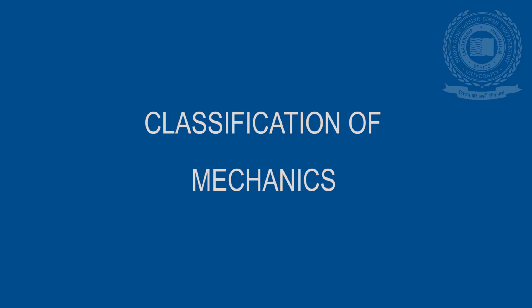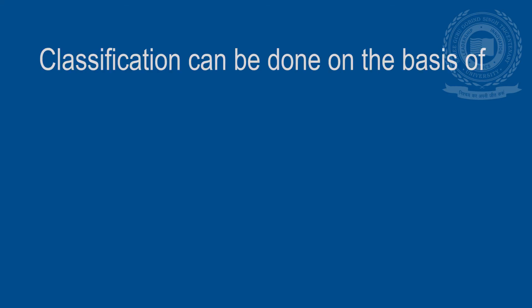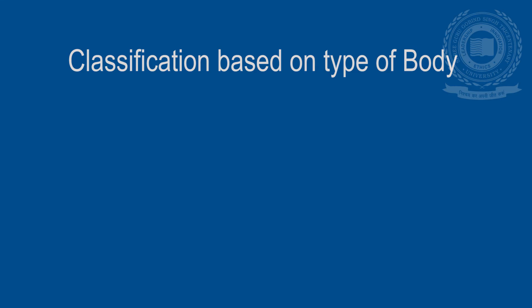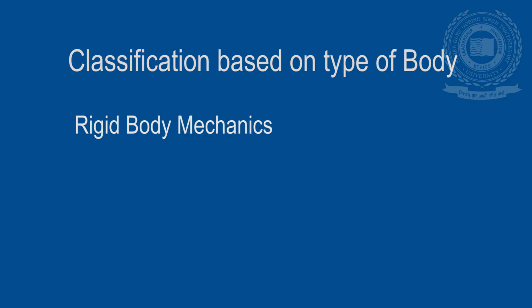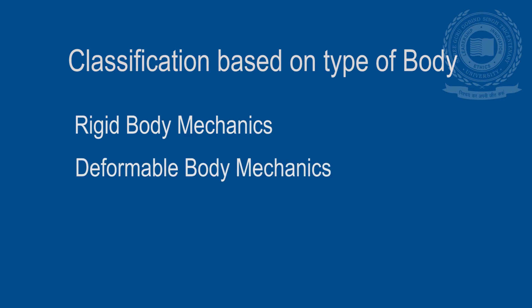Now we proceed to the part where we will be learning the classification of mechanics, or the different fields of mechanics. The study of mechanics can be classified on the basis of type of body and state of motion of the body. Mechanics can be classified into three categories based on the types of body: rigid body mechanics, deformable body mechanics, and fluid body mechanics.